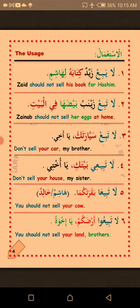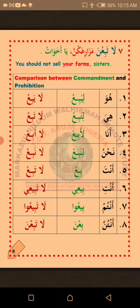Sitta, number six: La-tabī'ū ardakum ya ikhwa — don't sell your land, brothers, talking to a group of male persons. La'ala ka fahimt — I hope you understand. Sabi'ah, number seven: La-tabī'na mazari'akuna ya akhawat — don't sell your farms, sisters, talking to a group of female persons. La'ala ka fahimt — I hope you understand.